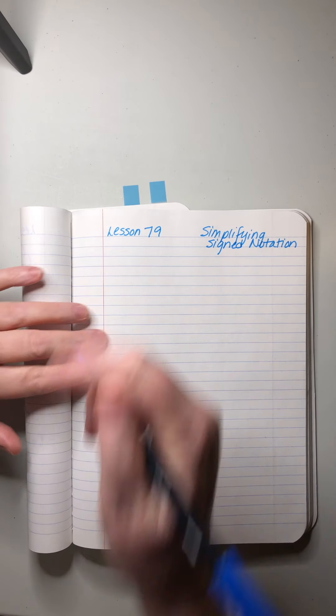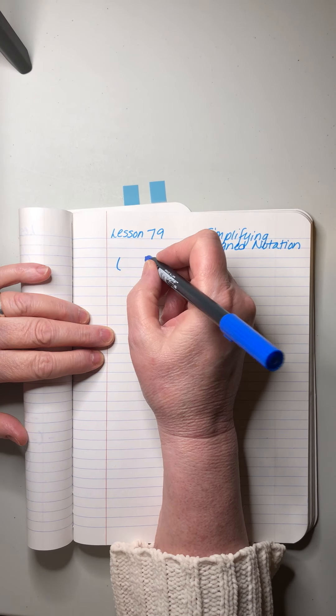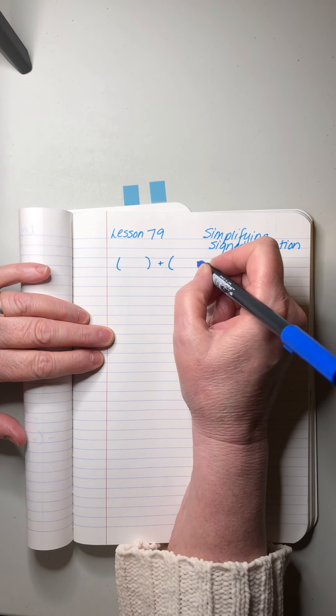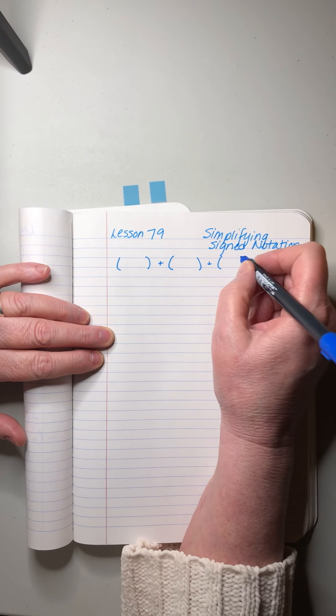Saxon Algebra 1 half, lesson 79. We've been working on adding chains of signed numbers, sometimes positive, sometimes negative, smooshing them all together. Up until now, we have been dealing with a situation where John puts a number and a sign inside parentheses.